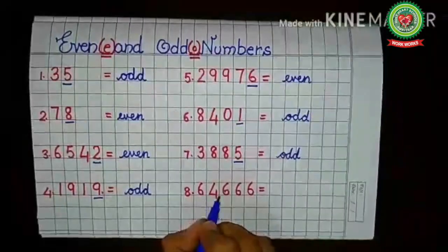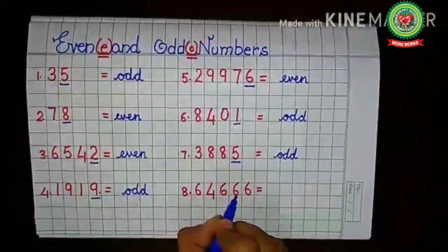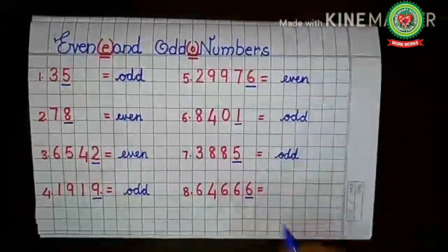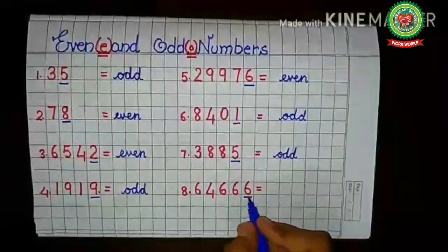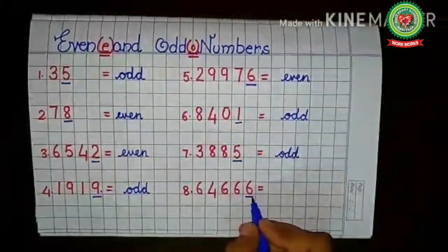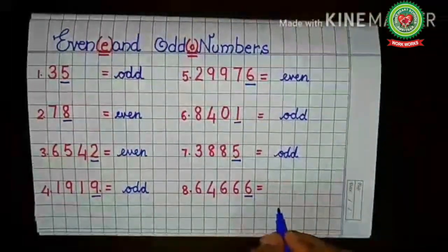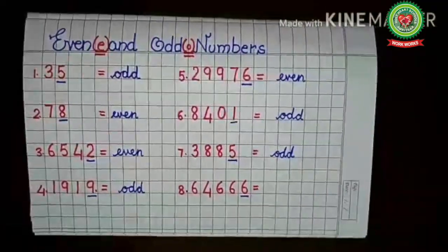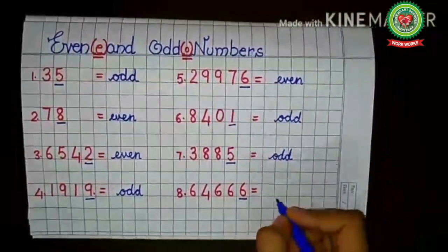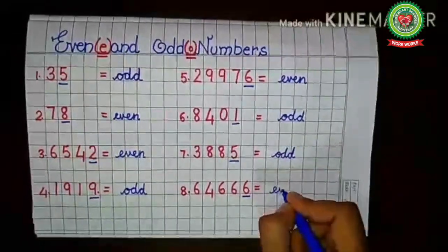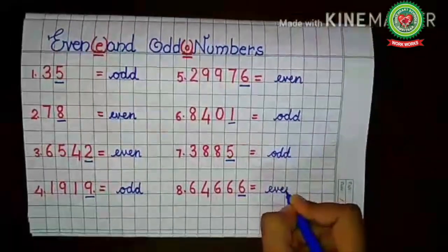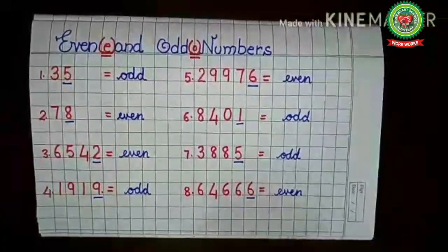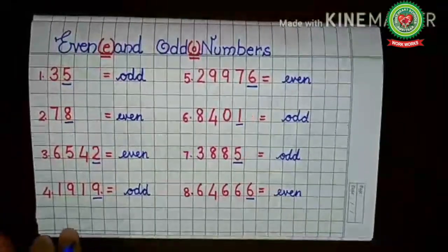The last example is 64666 — sixty-four thousand six hundred sixty-six. The last digit is six. Six comes in the table of two: two threes are six. So this full number is an even number. Sixty-four thousand six hundred sixty-six is an even number.